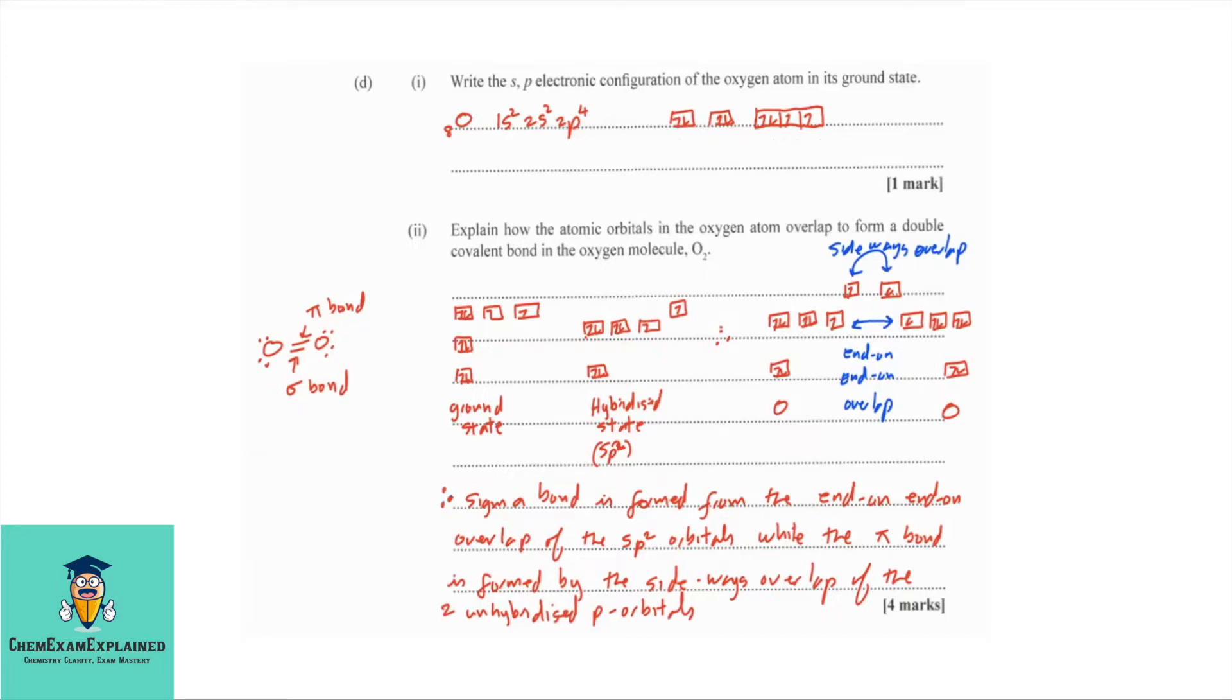Part 2. Explain how the atomic orbitals in the oxygen atom overlap to form a double covalent bond in the oxygen molecule O2. I start out by looking at a simple diagram of the oxygen molecule, showing you that the first bond is a sigma bond, and the second bond is a pi bond.